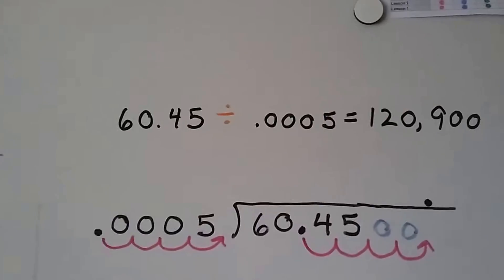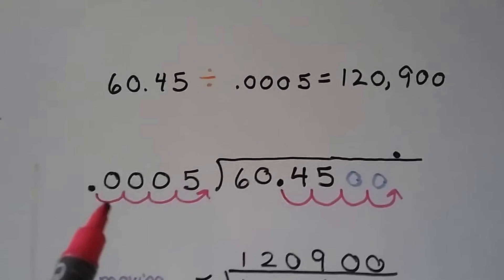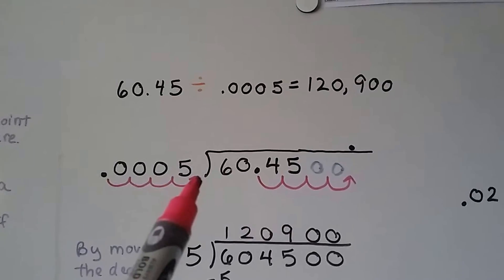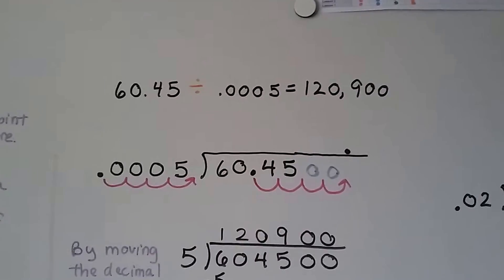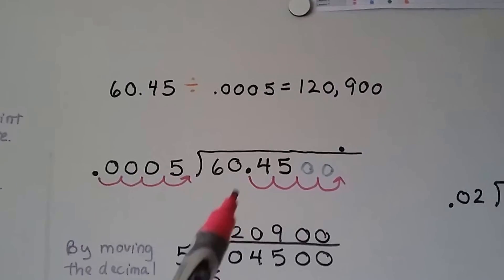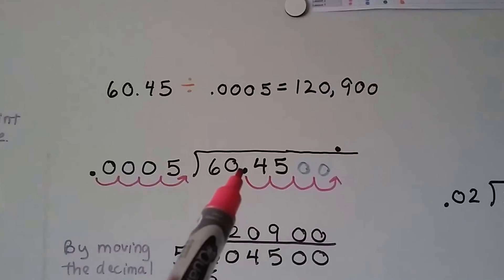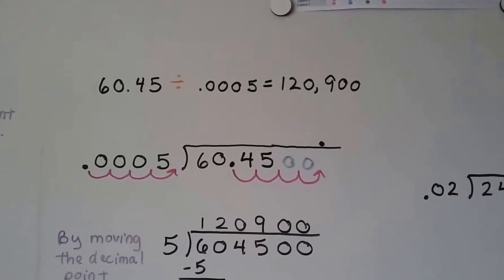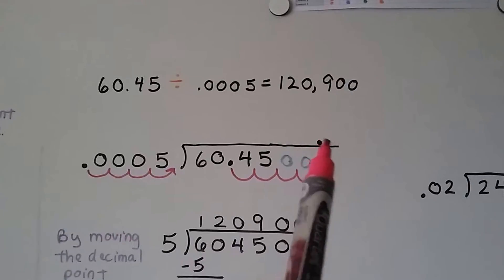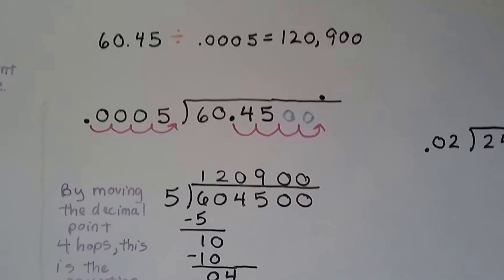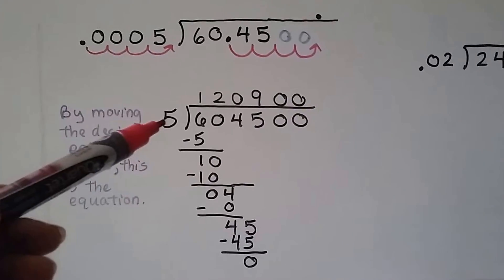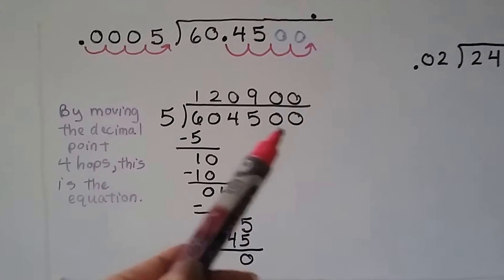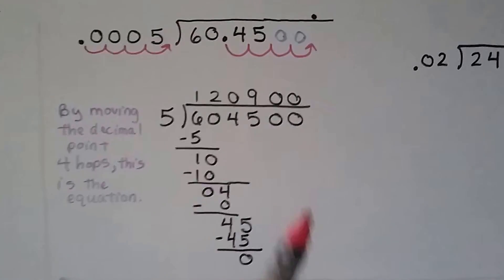If we want to divide and we've got a lot of decimal places in both the dividend and the divisor, we move the divisor's decimal back — in this case four hops — to make it a whole number. That means we also have to move the decimal in the dividend, 60.45, back four hops as well. We had to add two zeros. The decimal point goes up into the quotient because we moved it back four. We end up with five as a whole number divisor, and 6045 as the dividend, because we moved the decimal point all the way back.